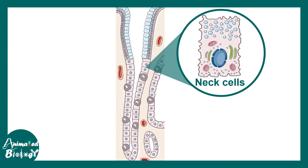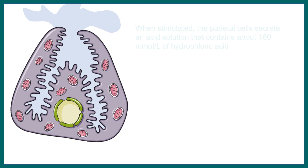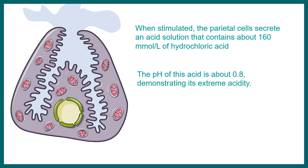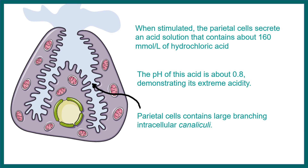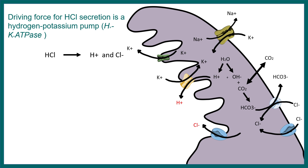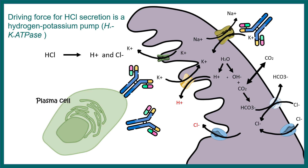In the stomach there are several cell types including neck cells, parietal cells, and peptic cells. Parietal cells are very important in the context of gastritis — they secrete HCL, approximately 160 millimoles per liter of hydrochloric acid. Parietal cells contain specific large branchings known as canaliculi, and there are several transporters on their surface. The driving force of HCL secretion is regulated by the sodium-potassium pump. In autoimmune gastritis, autoantibodies target these pumps and render them non-functional.